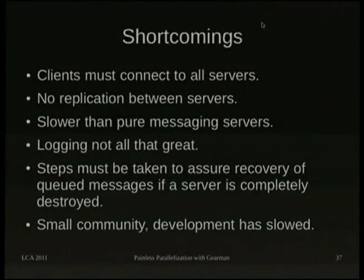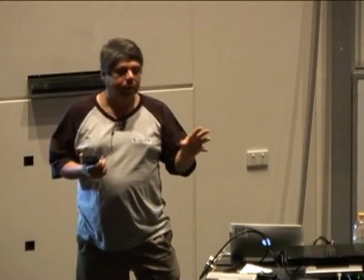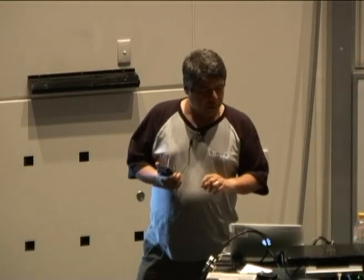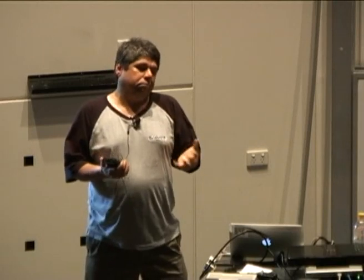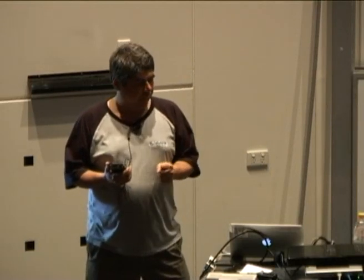What are the shortcomings? Clients and workers must connect to all servers. If one of your GearMan servers goes down, the data in that queue is not known to any other job brokers. If it comes back up it'll pick up again, but if that machine is destroyed, you might have lost that data — so take precautions to replicate that data, at the database level or otherwise. It's a little bit slower than RabbitMQ or AMQP, but in my case a couple of milliseconds doesn't matter — it takes longer to connect to a database and run a query. The logging could tell you a lot more details. And steps must be taken to ensure recovery of queued messages if a server is completely destroyed.